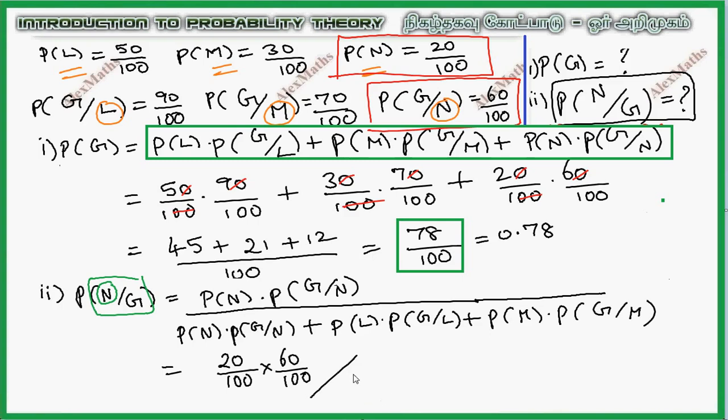So 20 by 100 into 60 by 100, whole divided by 78 by 100. Cancel the hundreds, balance 12 by 78. Simplifying, the answer is 2 by 13.